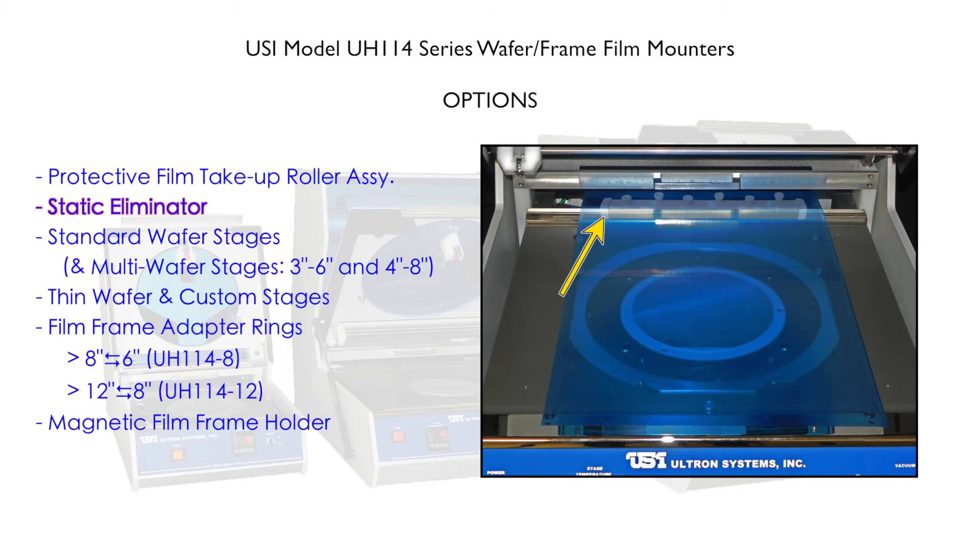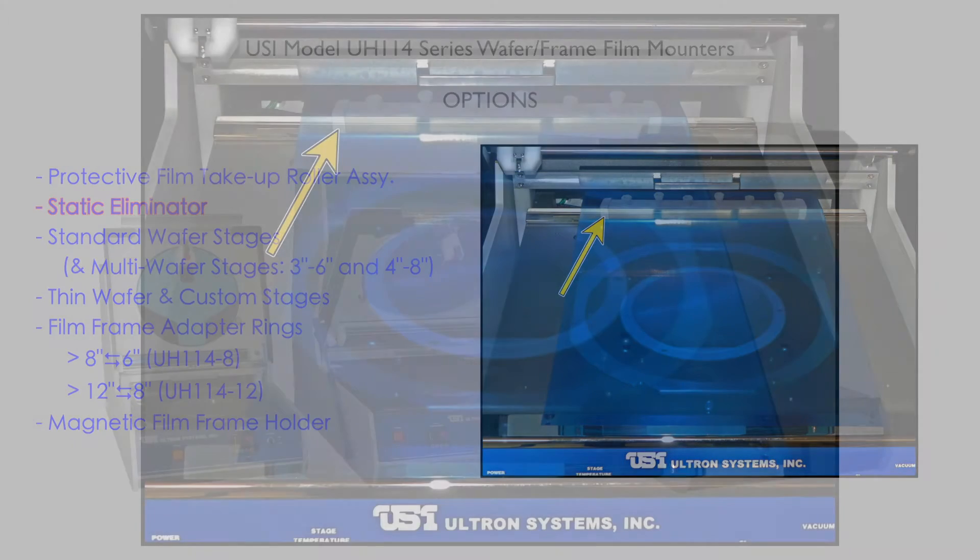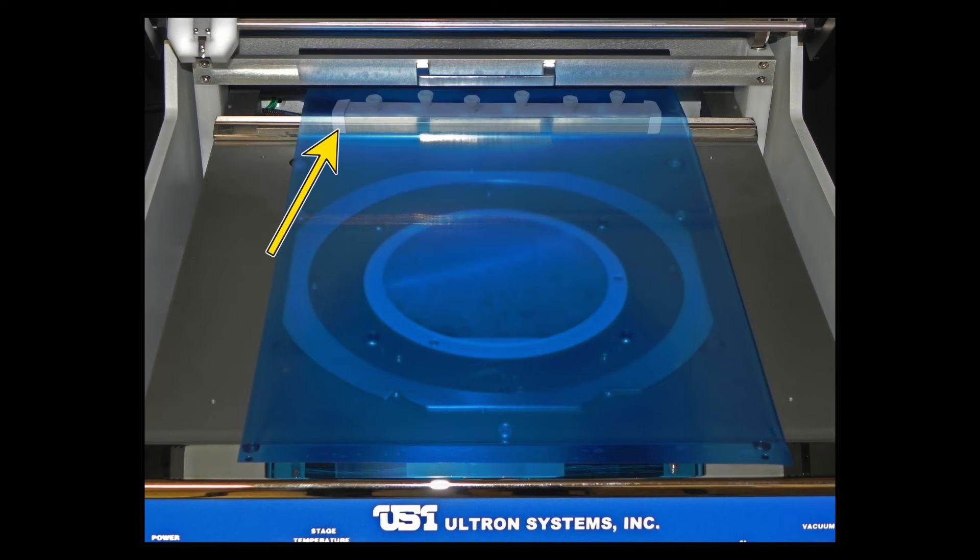Static eliminator. The static eliminator is aligned under the film path to remove static electricity immediately prior to film application onto the wafer.